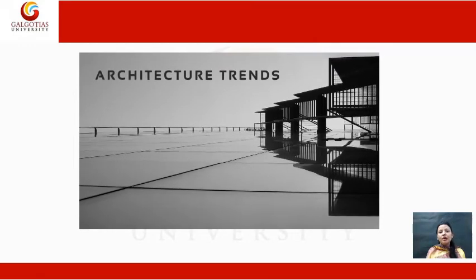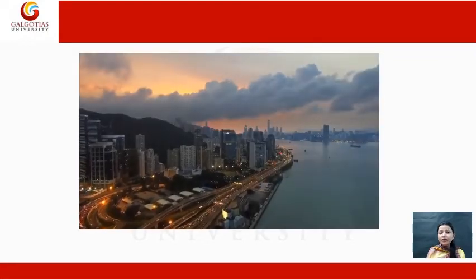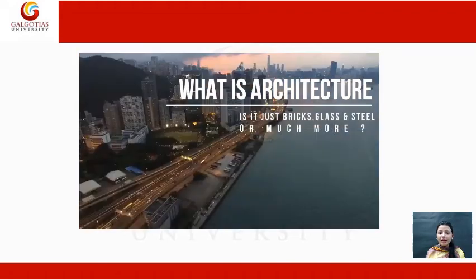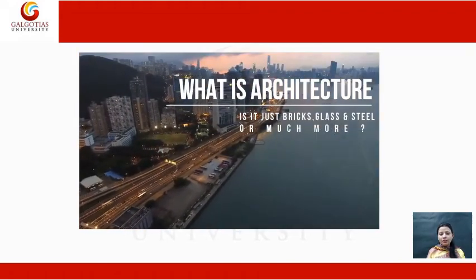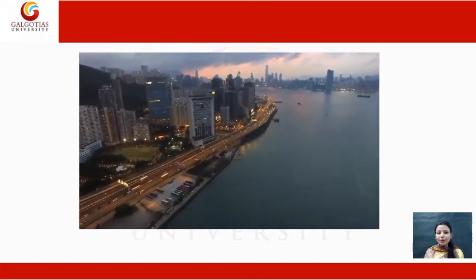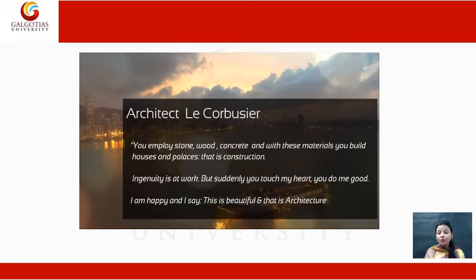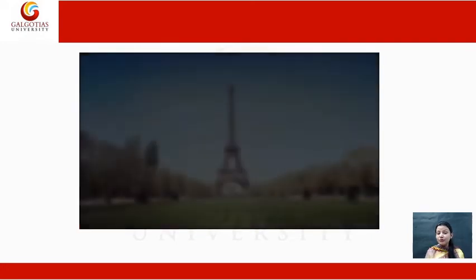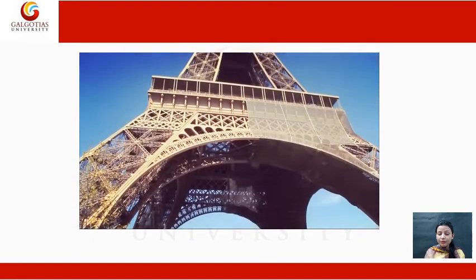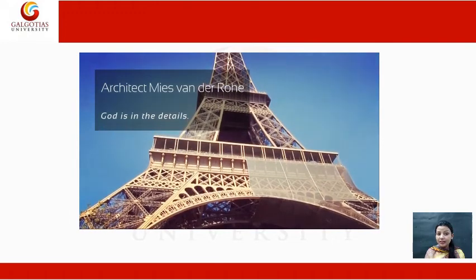Architecture is the process and product of planning, designing, and constructing buildings or other structures. So, what is architecture — is it just bricks, glass, and steel, or much more? In this video, we see various quotes by famous architects. Le Corbusier said: 'You employ stone, wood, concrete, and with these materials you build buildings.' The Eiffel Tower is one of the best examples of architecture. Architect Mies van der Rohe said: 'God is in the details' — as you can see in the details of architectural buildings.